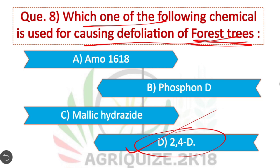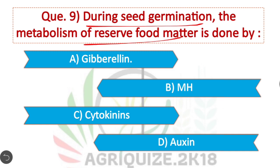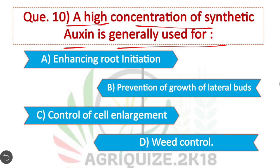Question 9: During seed germination, the metabolism of the reservoir of food material is done by — Option A is correct. Question 10: 2,4-D when applied at more than 20 ppm acts as a synthetic auxin used for weed control. Option D is correct.